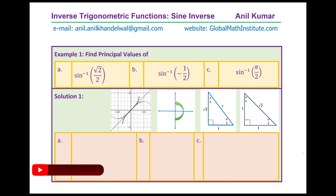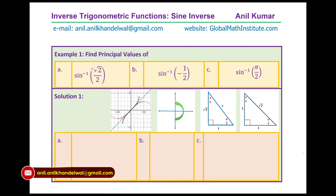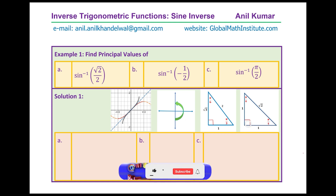We will first discuss how to solve these questions and then provide the complete solution. Example 1: find the principal value of (A) sine inverse of root 2 over 2, (B) sine inverse of minus half, and (C) sine inverse of pi by 2. The value root 2 over 2 reminds us of the pi by 4 special triangle. In the pi by 4 triangle, sine of pi by 4 equals root 2 over 2, and therefore sine inverse of root 2 over 2 equals pi by 4. The output of sine inverse is the angle in radians.